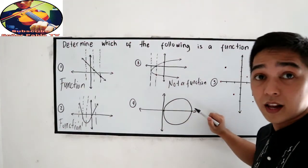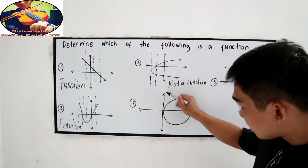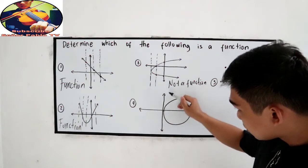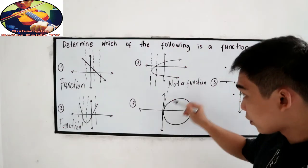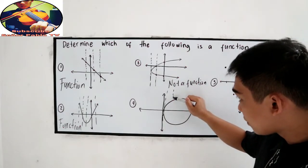Number four. Obviously, a circle. Vertical line test. The leftmost of the circle, obviously it touches one point, but if we're going to the right,